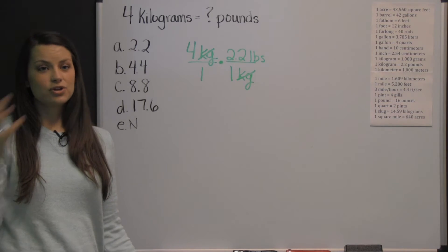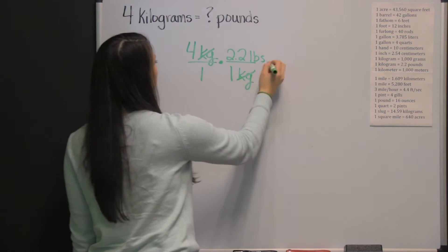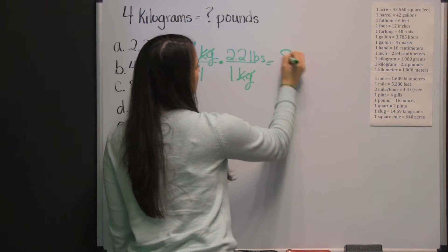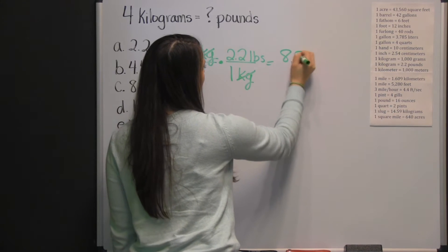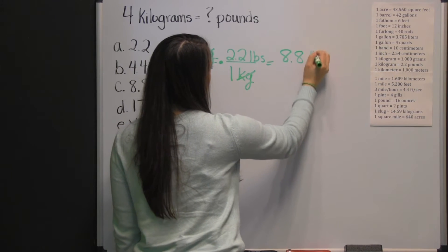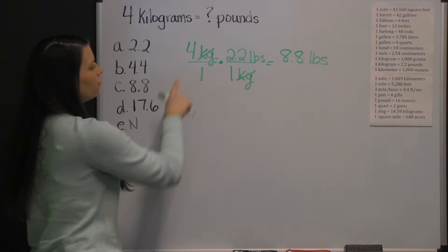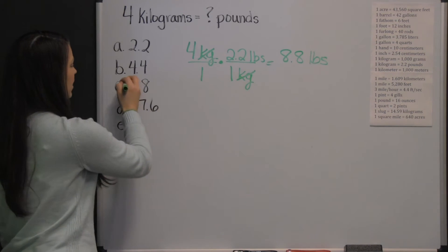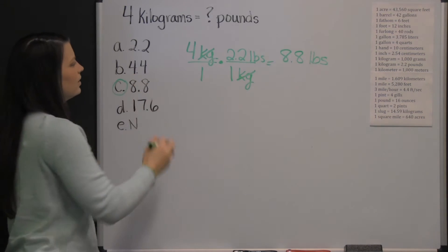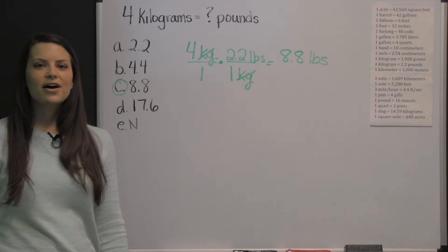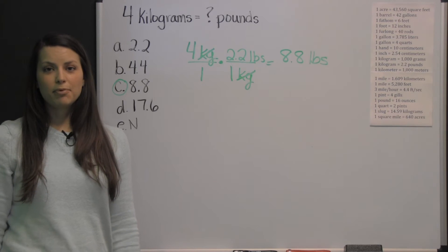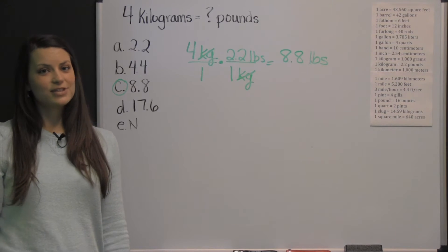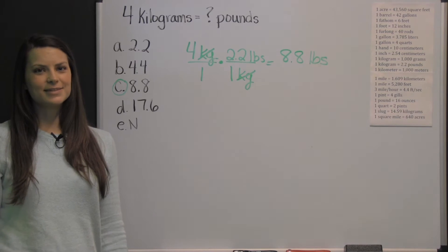Now we just multiply straight across. 4 times 2 and 2 tenths is 8 and 8 tenths pounds. So that means that 4 kilograms is 8 and 8 tenths pounds. There you have one example of the type of problem you'll see in the mathematical usage section of the CAST test.